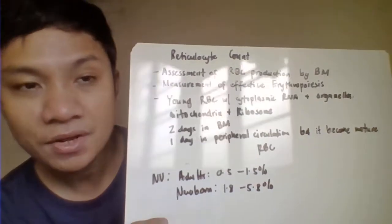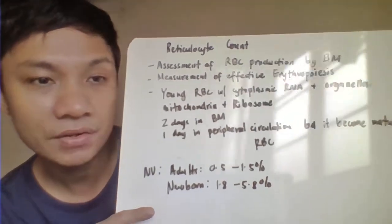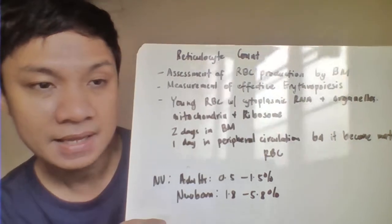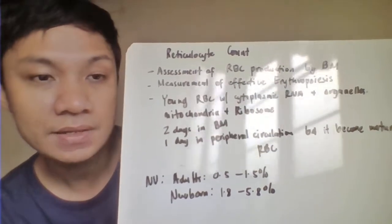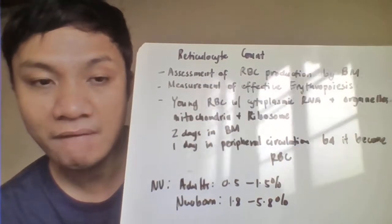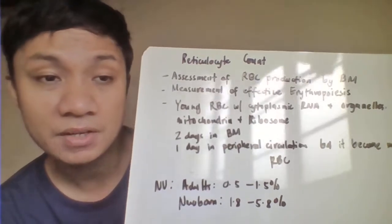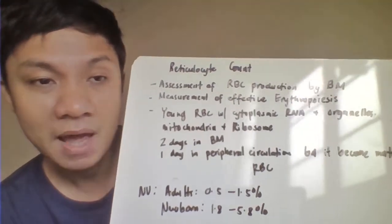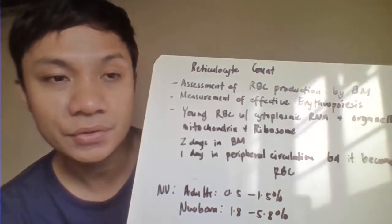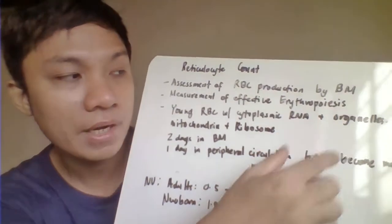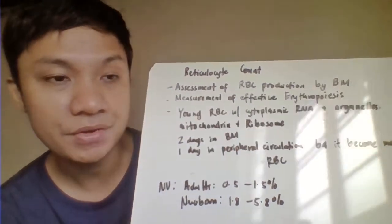Reticulocytes are characterized by the presence of cytoplasmic RNA — specifically a fine reticulum of RNA — which allows you to visualize them using a supra vital stain. At the same time, reticulocytes also contain cell organelles, primarily mitochondria and ribosomes.